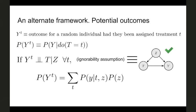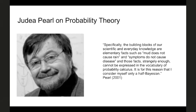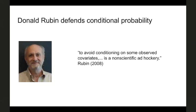Judea Pearl has frequently stressed that answering causal questions requires something beyond probability theory. He says things like 'mud does not cause rain' or 'symptoms do not cause disease' can't be expressed in the vocabulary of probability calculus, and this is why he considers himself only half a Bayesian. On the other side, we have well-known statisticians saying that to avoid conditioning on certain observed covariates is non-scientific ad hoc-ery and that everything can be done purely with a statistical framework.